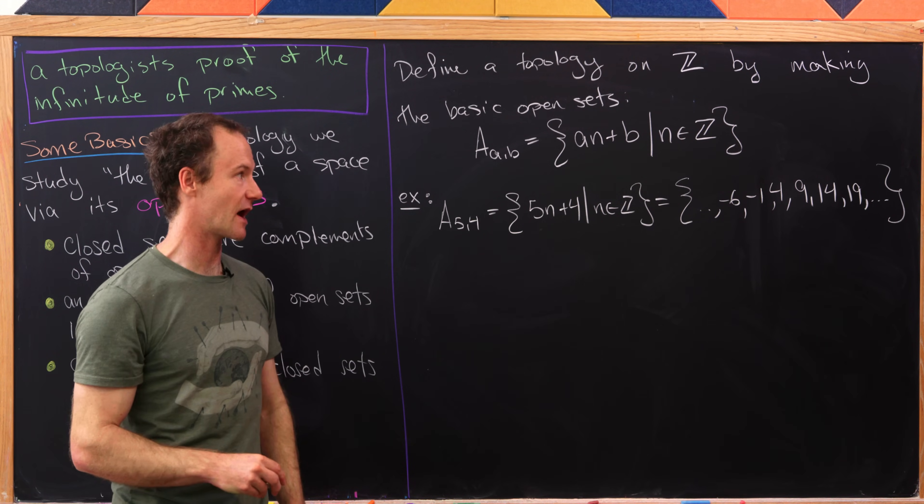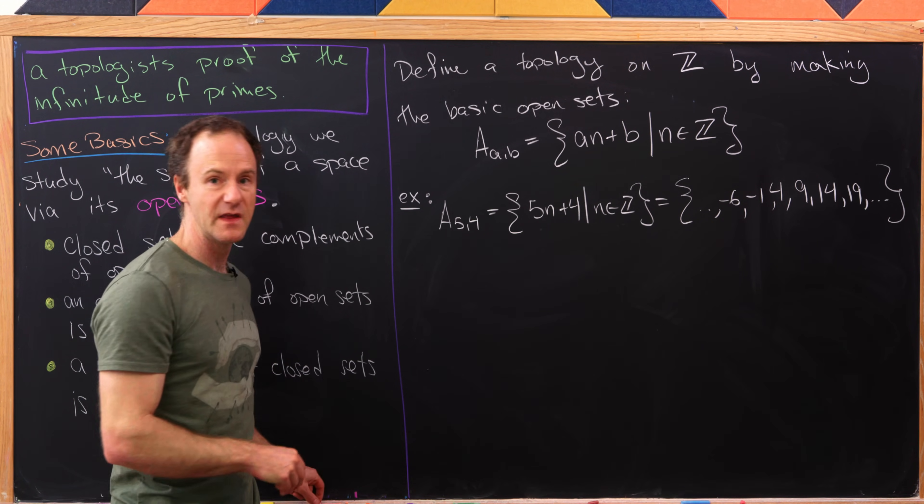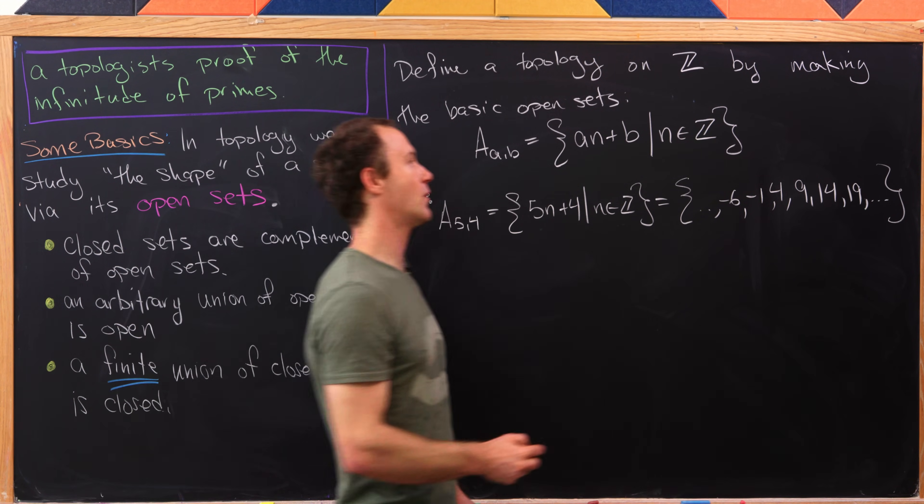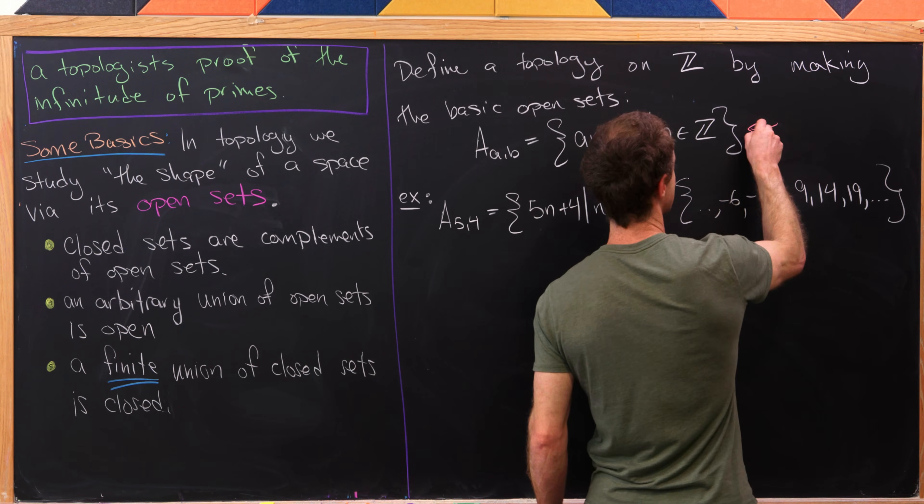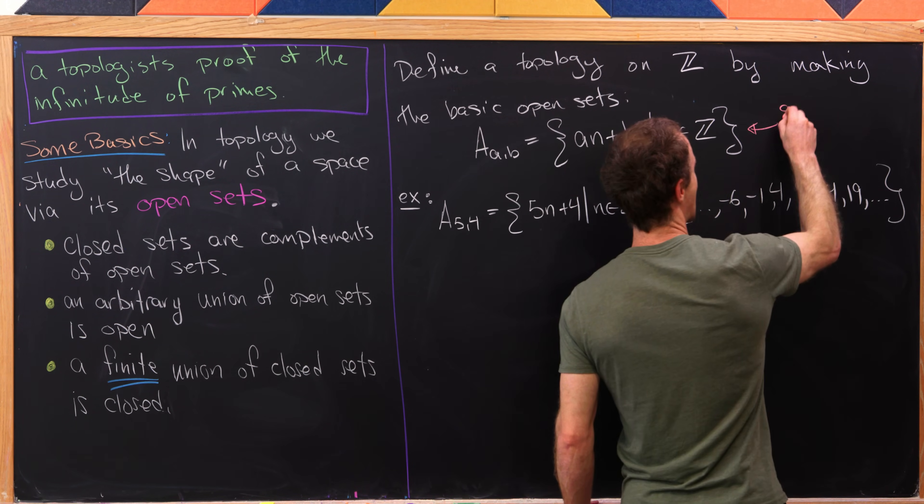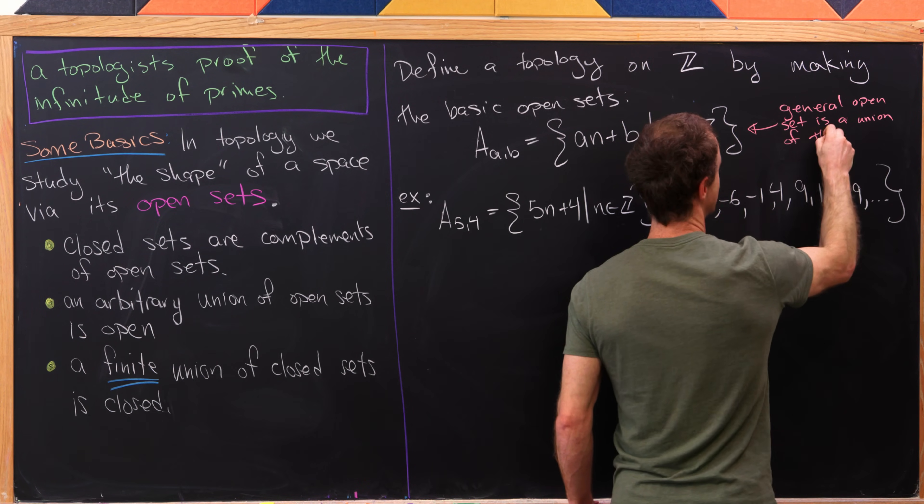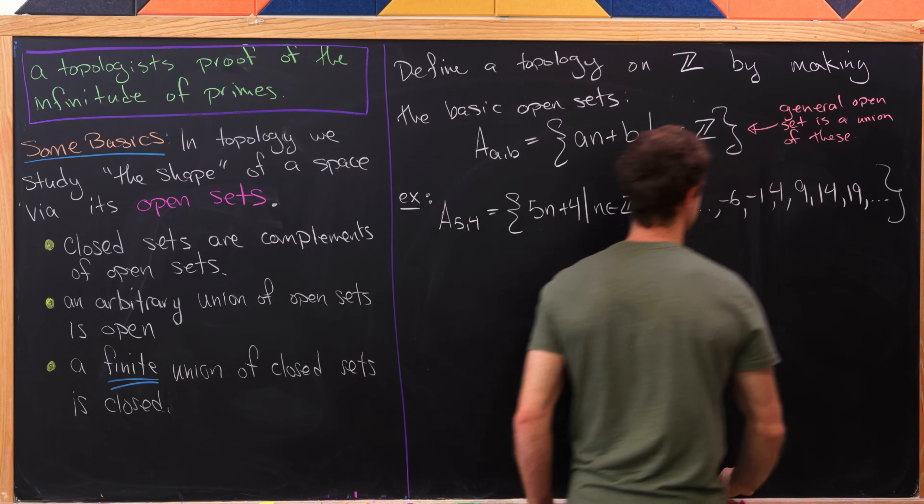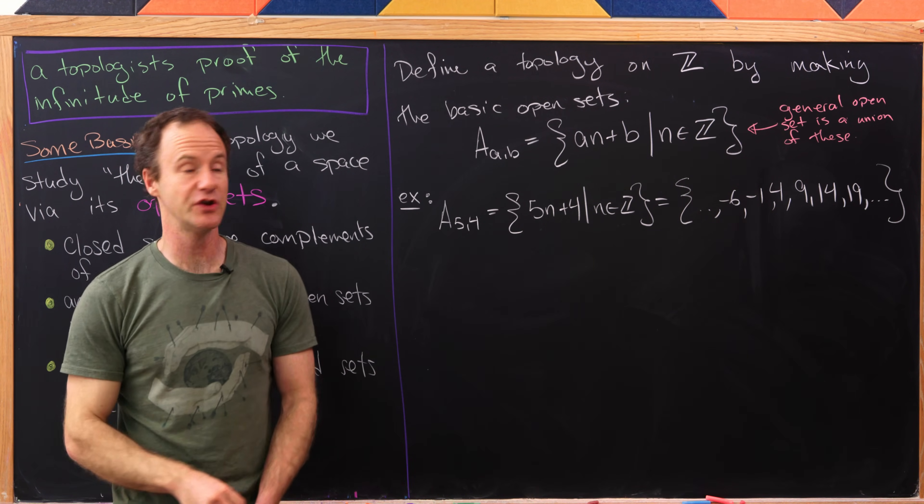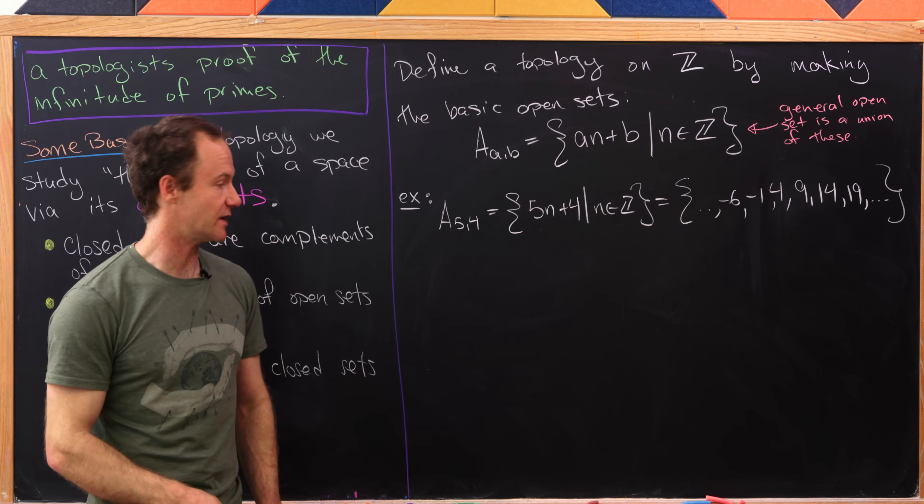Okay. So that's an example of our arithmetic sequence. And then before we move on, I'd like to point out that these are the basic open sets, which means a general open set is a union of these types of sets. And it could be a finite union or it could be an infinite union.